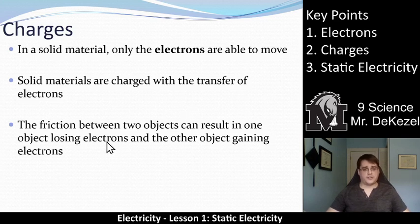How you move electrons between one and another? Well, a really common way is friction. So friction between two objects can result in one object losing electrons and the other object gaining electrons.